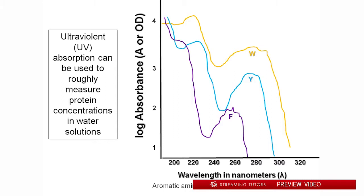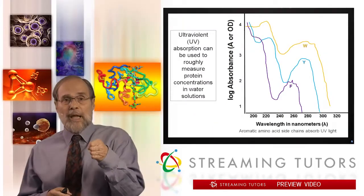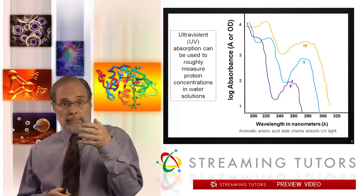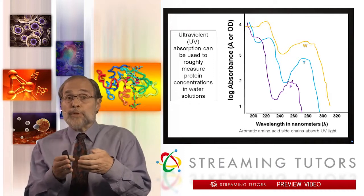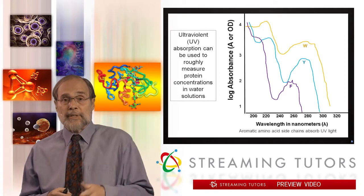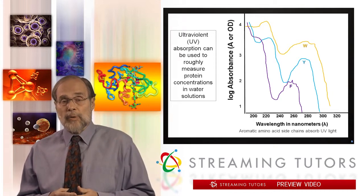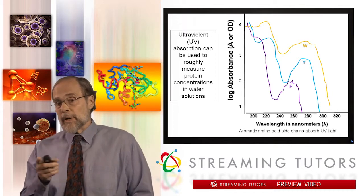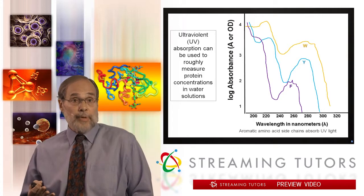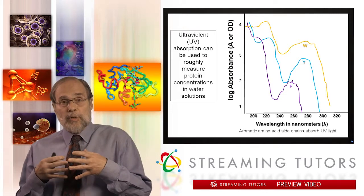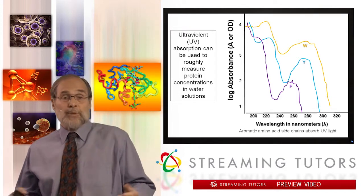Remember your single letter code: W is tryptophan, Y is tyrosine, F is phenylalanine. Along the horizontal axis, the wavelength of light is being changed, and on the vertical axis the amount of absorbance is being measured. You shine the light through a tube with transparent aqueous solution, put the amino acid in, and ask how much of the light doesn't make it through because it's being absorbed — and the vertical axis is a log scale. So these amino acids absorb tremendous amounts of light in the ultraviolet. Around 280nm or down around 220nm, you can measure the amount of protein quite nicely in bulk by measuring UV absorbance at the particular stage of purification you're working in.